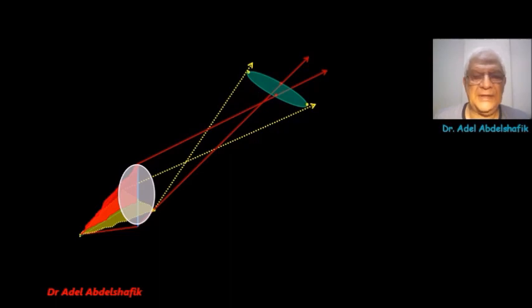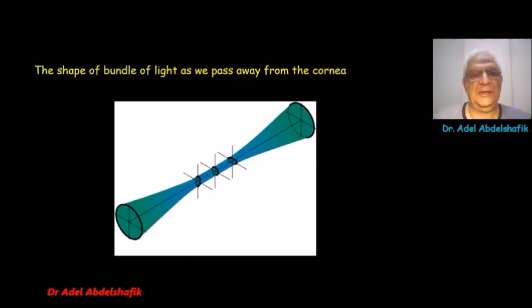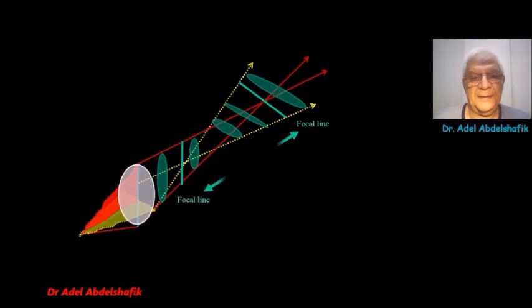As you see, as the bundle passes away from the cornea, the shape of the bundle changes. This is what has been seen.